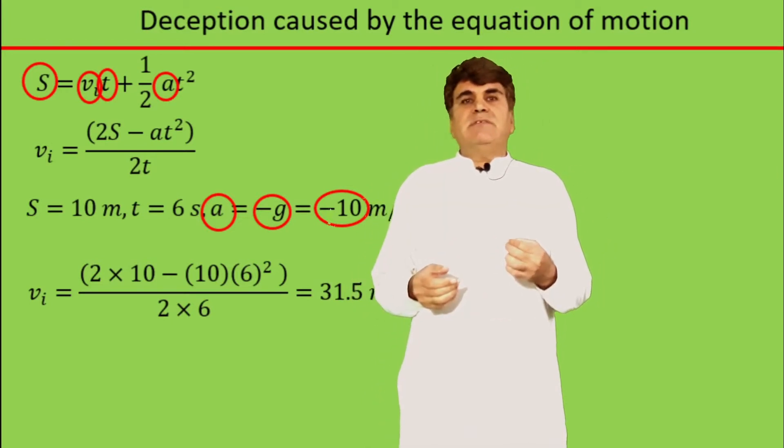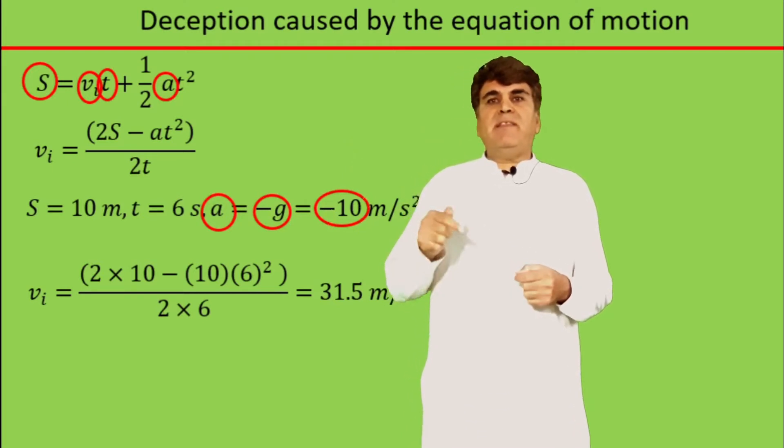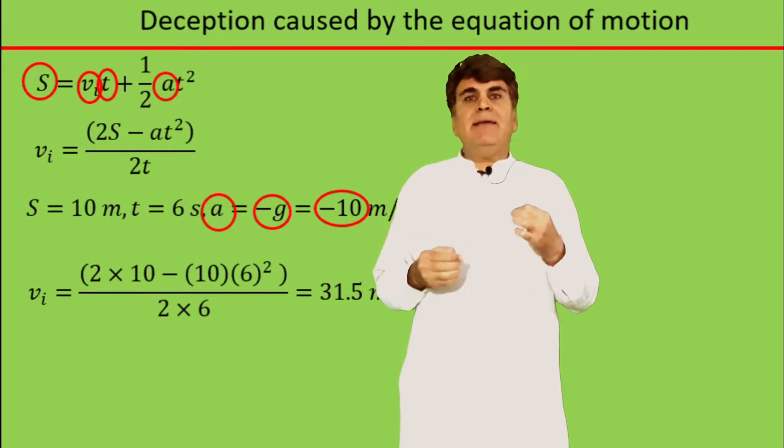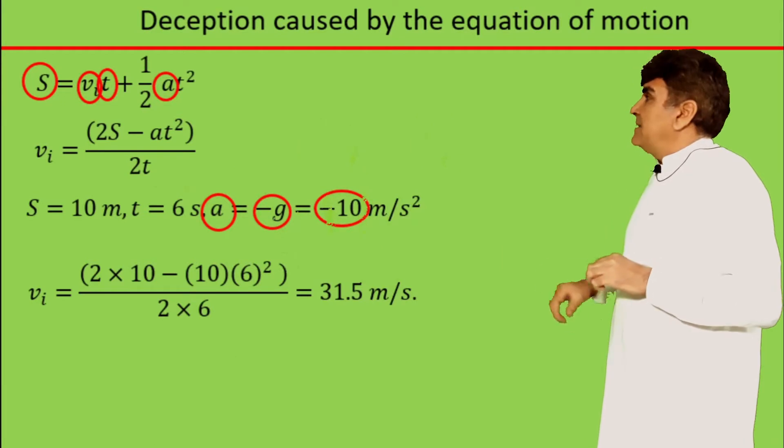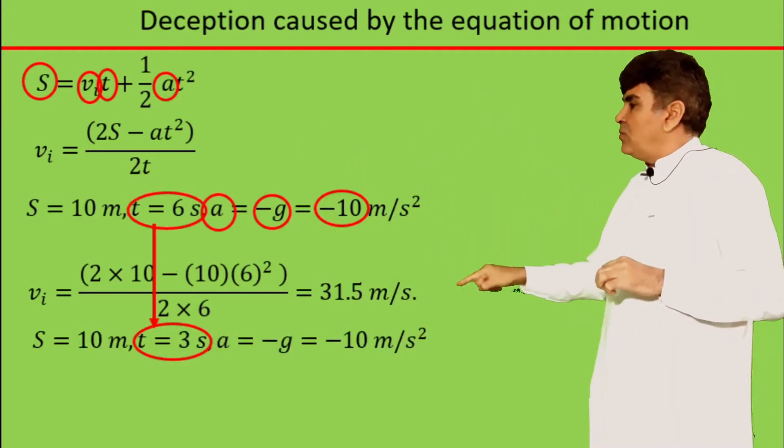The common sense says the velocity needs to be increased and you probably think the same as well. Let us see what this equation of motion says by plugging in this new data into it. That is replacing t equals 6 seconds with t equals 3 seconds.